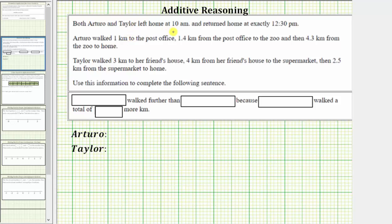Both Arturo and Taylor left home at 10 a.m. and then returned home at exactly 12:30 p.m. Arturo walked one kilometer to the post office, 1.4 kilometers from the post office to the zoo, and then 4.3 kilometers from the zoo to home. Taylor walked three kilometers to her friend's house, four kilometers from her friend's house to the supermarket, and then 2.5 kilometers from the supermarket to home.